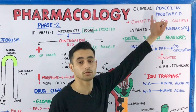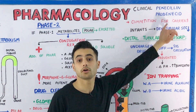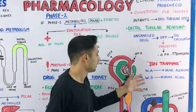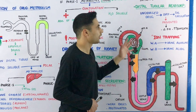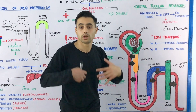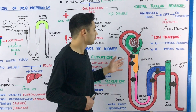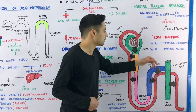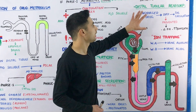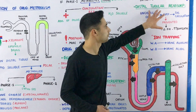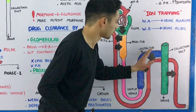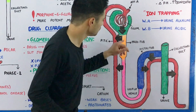In infants, the peritubular capillary network is less developed, so infants retain drugs in the body — drugs cannot be actively secreted into the proximal tubular lumen as effectively.